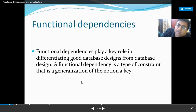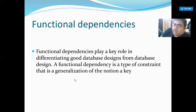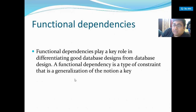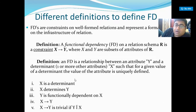Functional dependency is a type of constraint that is a generalization of the notion of a key, so it is based on the concept of a key. The key concept has already been discussed in DBMS — we have used several sorts of keys: candidate key, primary key, alternative key, and foreign key. Now let's start with a formal definition of functional dependency.